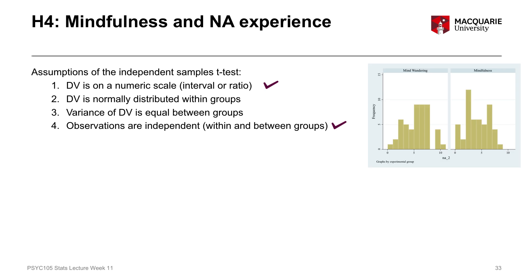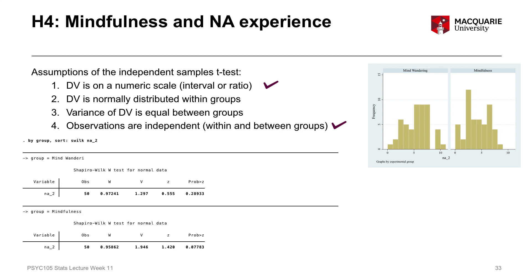Here's a histogram of negative affect 2 between our two different groups. For both groups the distributions are approximately normal — they're not perfect, they're a little bit wonky looking, but real data often look like this and can still be consistent with a normal distribution. Looking at our histograms and Shapiro-Wilk test results, both p-values for the Shapiro-Wilk tests are non-significant, both bigger than 0.05, which means both distributions are consistent with a normal distribution. That assumption is met.